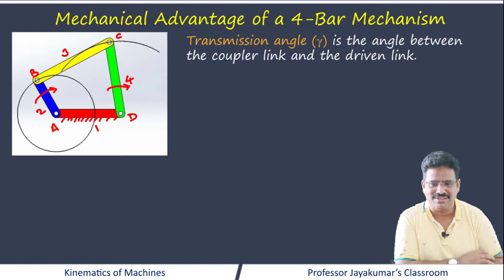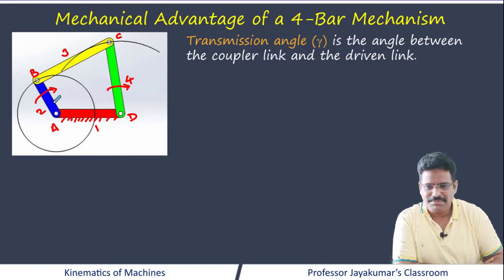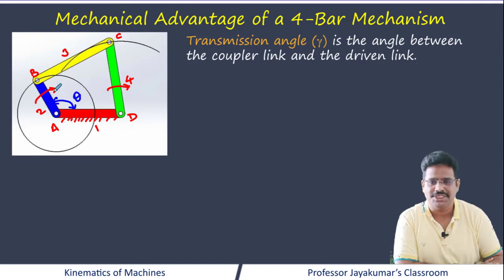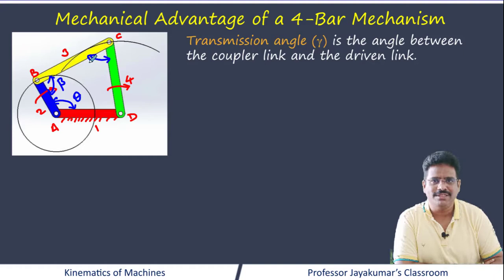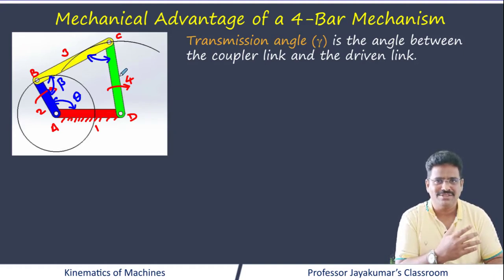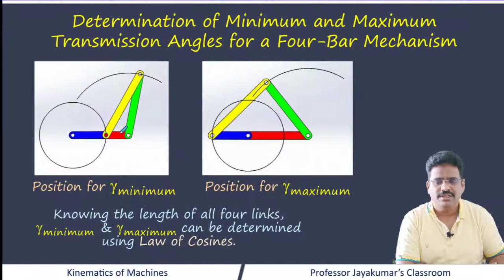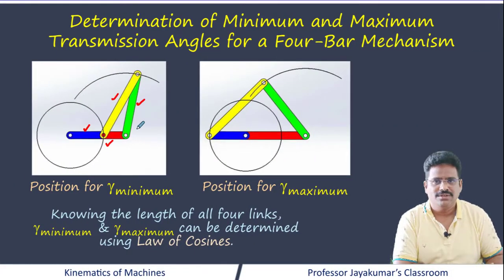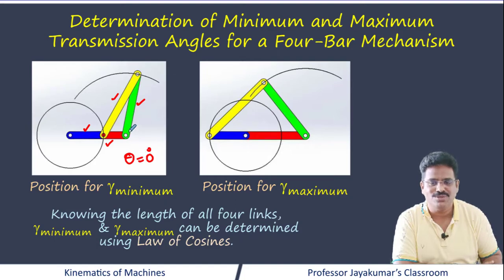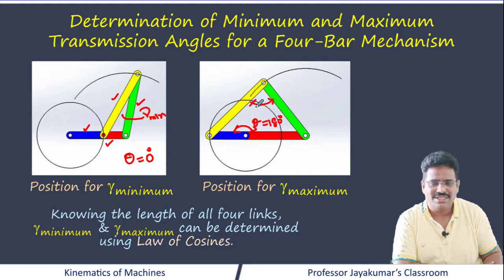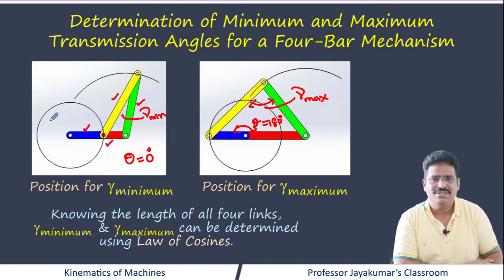The angle between the fixed link and the crank is known as crank angle theta. The angle made by the crank and the coupler is known as beta. The angle made by the coupler and the driven link — or rocker, lever, or follower — is known as transmission angle gamma. When lengths of all 4 links are given, we should be able to determine minimum and maximum transmission angles. When theta equals 0 degrees, the transmission angle will be minimum, and these are the two positions we are going to use while solving the problem.